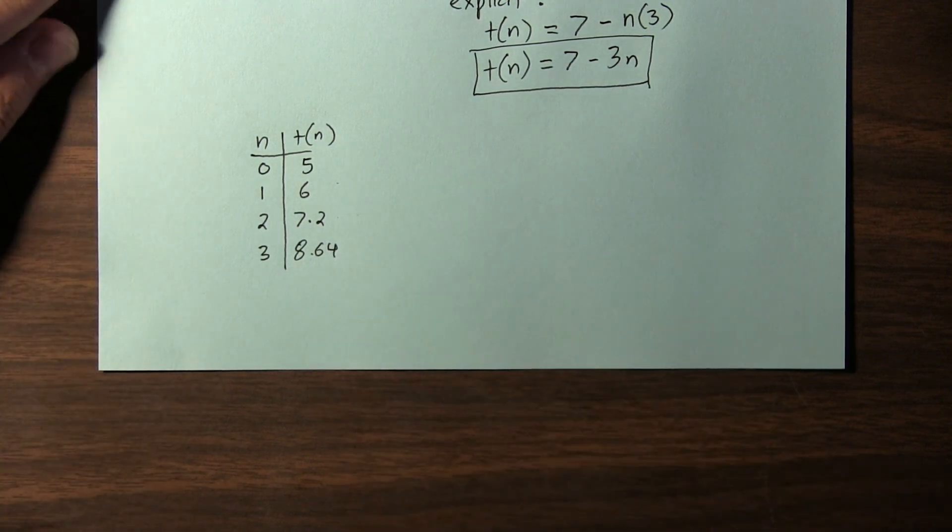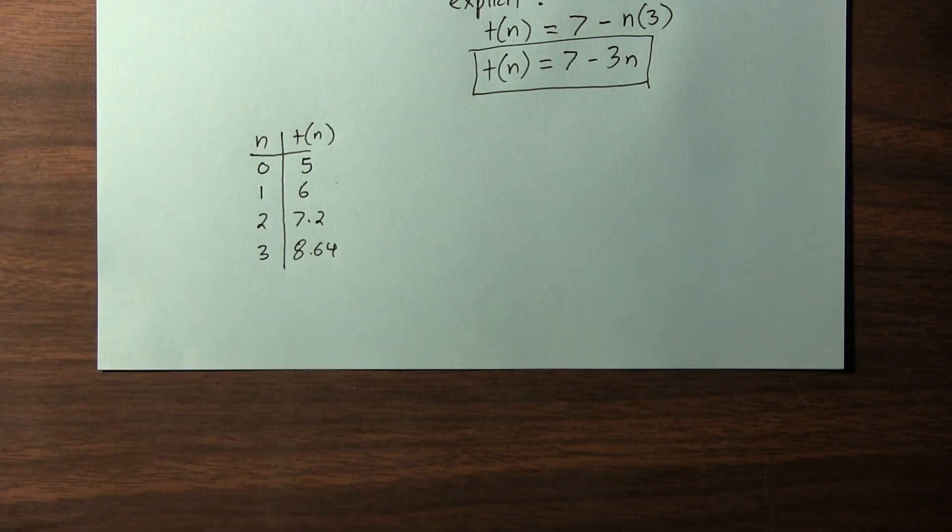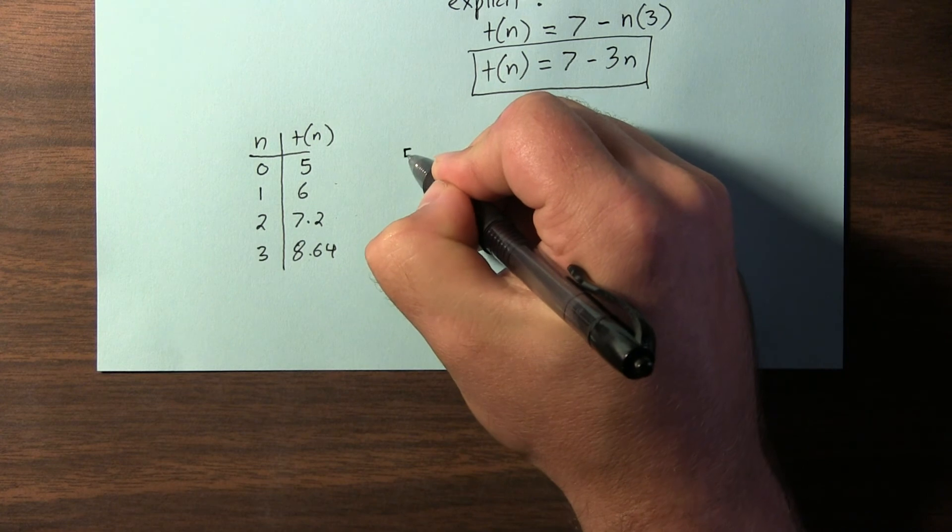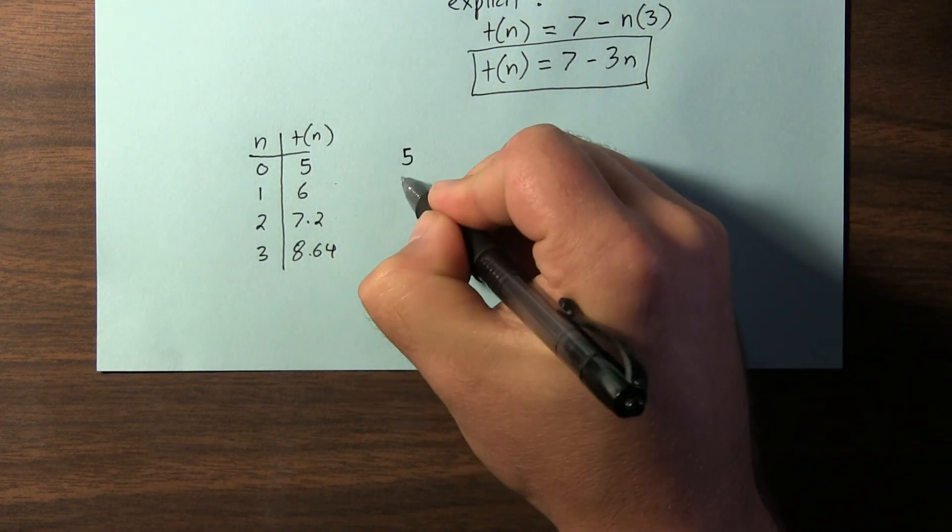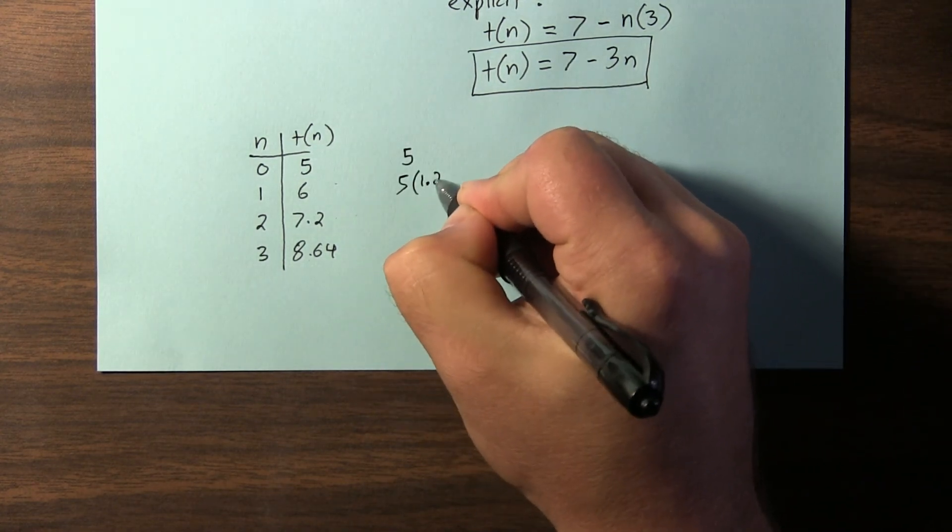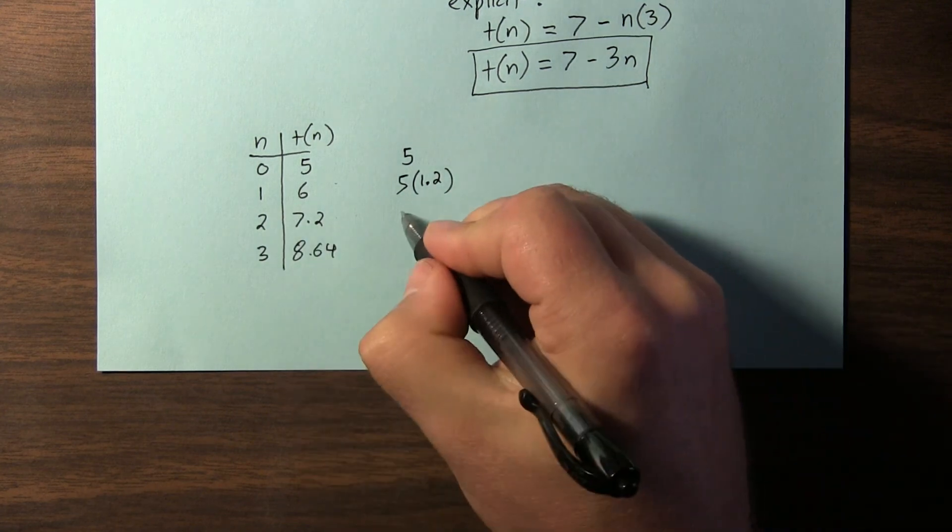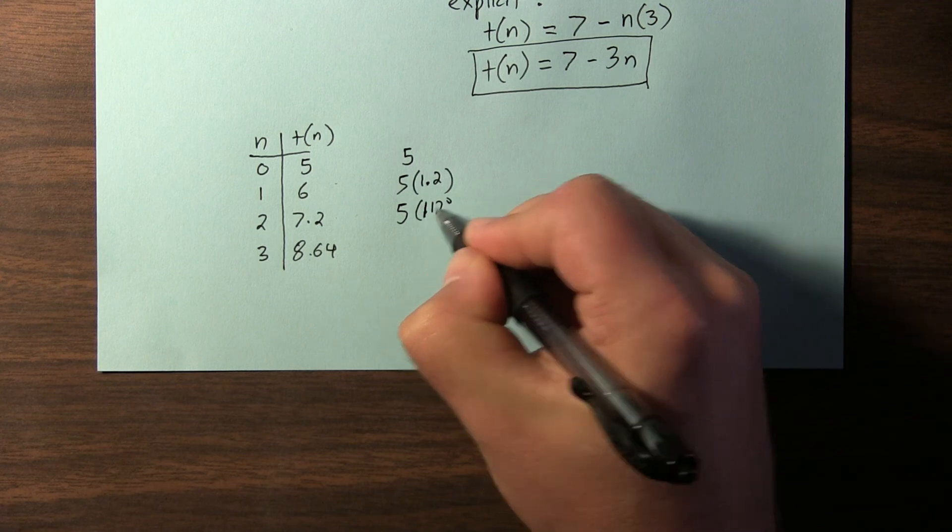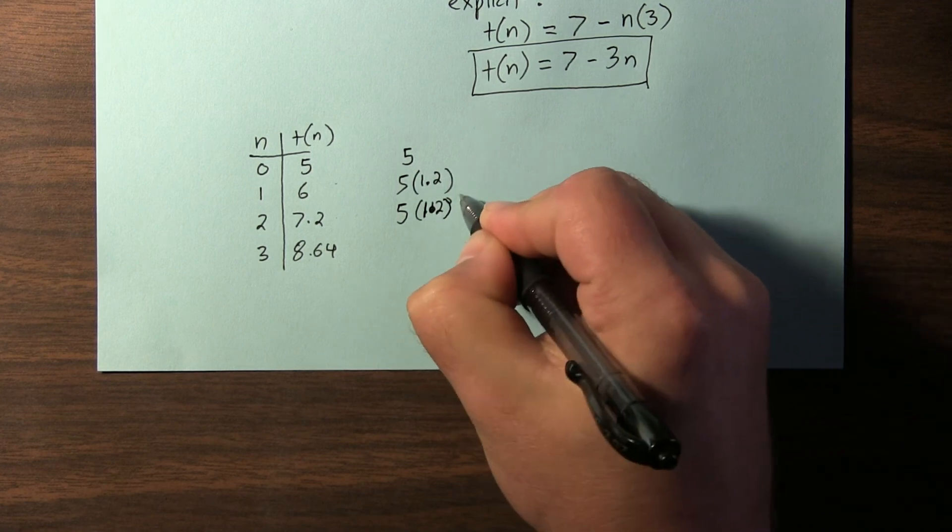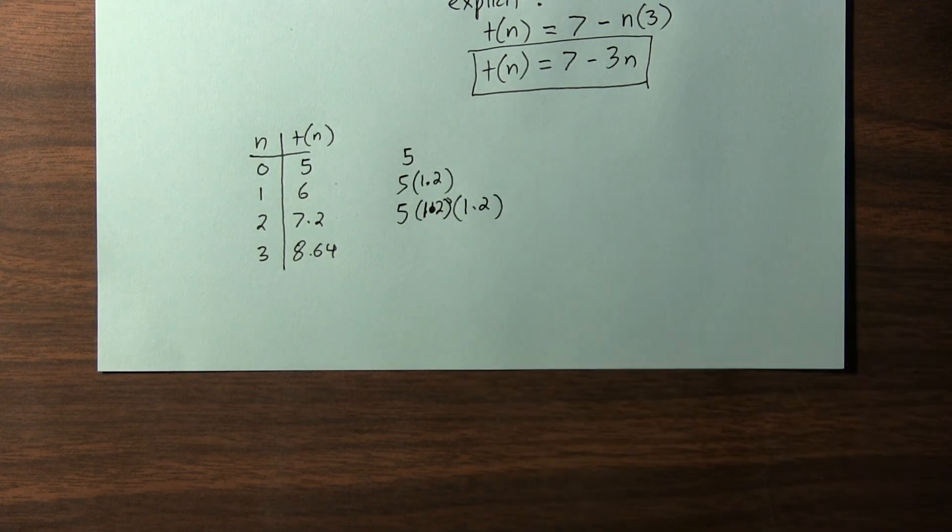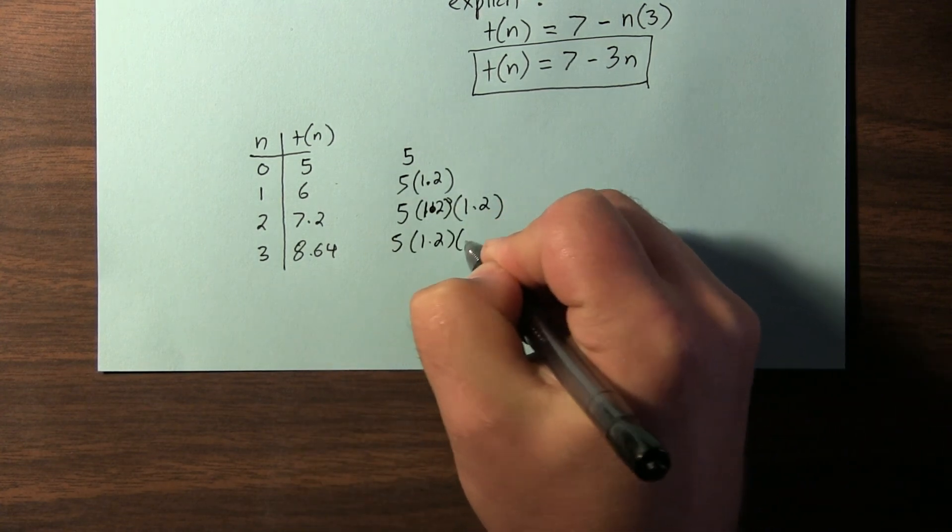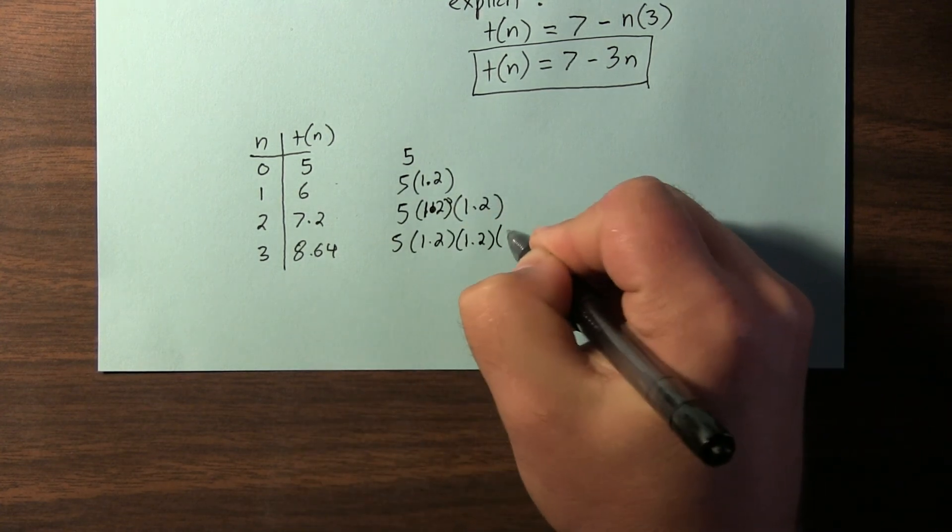Now let's figure out what's going on here so we can determine the explicit equation. This first, or the initial term is just 5. The next term is 5 times 1.2. That gives us 6. To get the next term, it's 5 times 1.2 times another 1.2. And our next term is 5 times 1.2 times 1.2 times another 1.2.